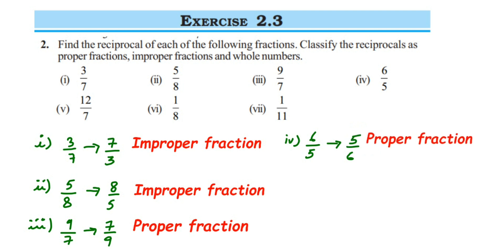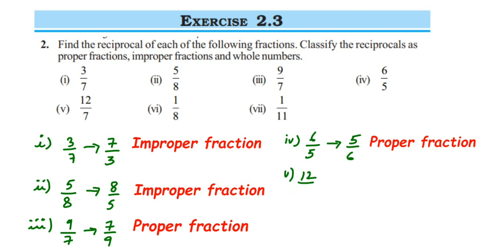The fifth one is 12 by 7. Its reciprocal is equal to 7 by 12. So we have the fifth question: 12 by 7, its reciprocal is 7 by 12. Since 7 is smaller than 12, it's a proper fraction — same as the previous one.